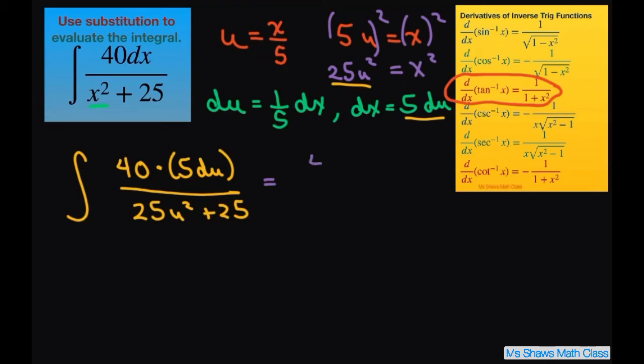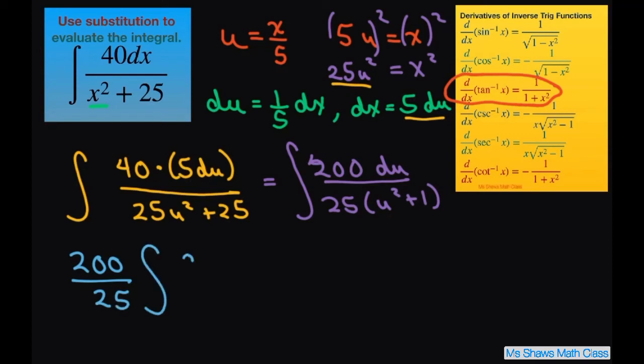Now let's simplify this further. I can write this as 200 du divided by, I can factor out a 25. This will be a u squared plus 1. Now before we start, let's go ahead and factor out the 200, our constant. 200 divided by 25. This gives us du divided by u squared plus 1.